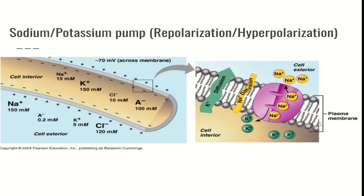The key aspect of repolarization and hyperpolarization is the sodium-potassium pump. The sodium-potassium pump works against the concentration gradient to move sodium ions out of the cell and potassium ions into the cell. This is how we repolarize the membrane and get back to that negative 70 millivolts resting voltage.